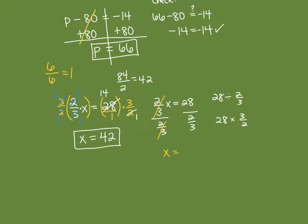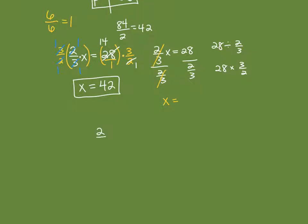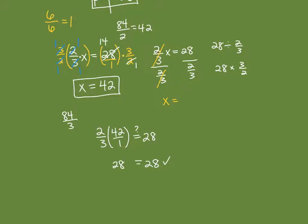Now let's check: 2-thirds times x, which we said is 42 — write it as 42 over 1. Is that really equal to 28? You can multiply across: 2 times 42 is 84 over 3 times 1 is 3, and 84 divided by 3 is 28. Or cross-reduce: 42 divided by 3 is 14, and 3 divided by 3 is 1, so the denominator is 1. Then 2 times 14 is 28.